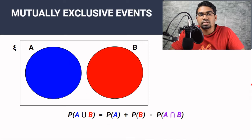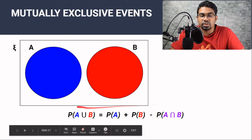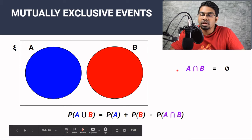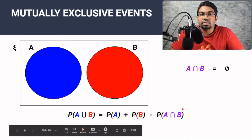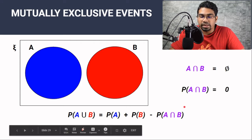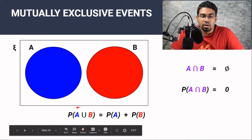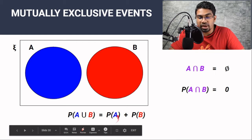When it comes to mutually exclusive events, the formula is actually exactly the same, but it can be simplified further. If you notice, A intersect B is actually an empty set — there is no A intersect B. Therefore, the probability of A intersect B will be 0, and we can eliminate the minus A intersect B term. So for mutually exclusive events, the formula simplifies to: probability of A union B equals the probability of A plus the probability of B.